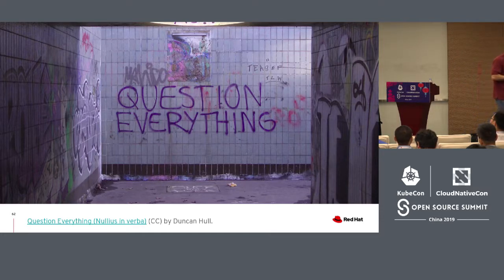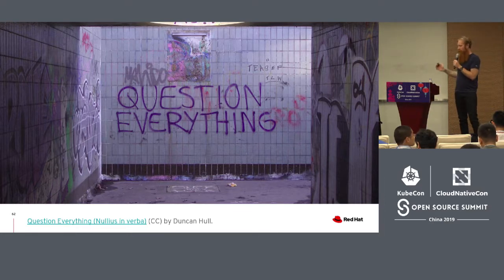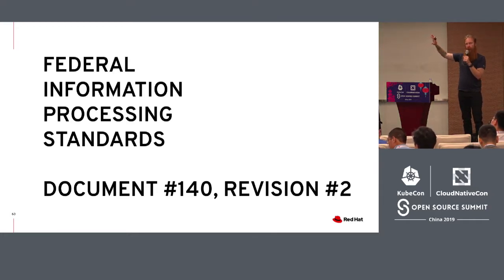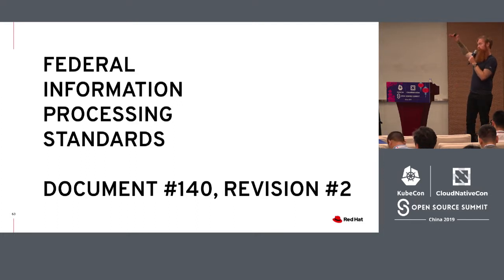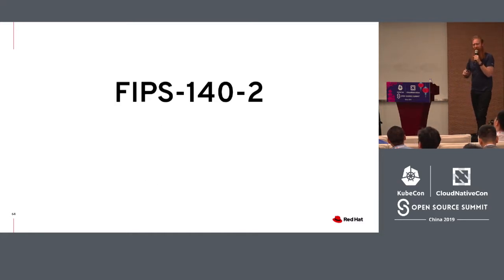My plea to folks is to ask questions. But really, why does Red Hat care? Envoy, Istio Proxy — why does it matter what SSL library is actually used? Tragically, it matters because of this word salad. Within the US and Canada, there's this thing called the Federal Information Processing Standards, document number 140, revision number 2, also known as FIPS 140-2.